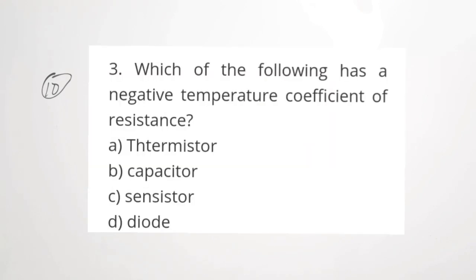Tenth question is from electronic instrumentation. Which of the following has a negative temperature coefficient of resistance? Option A: thermistor. Option B: capacitor. Option C: sensistor. Option D: diode. The correct answer is option A, thermistor. In thermistors, the temperature coefficient of resistance is negative — as temperature increases, resistance has a negative effect.